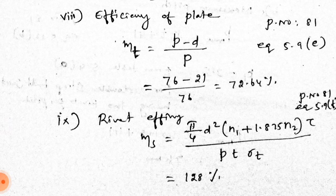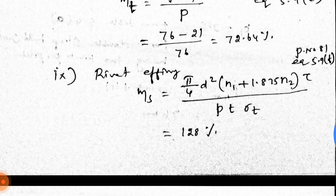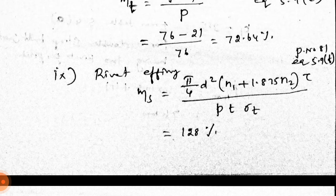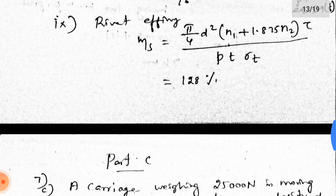The rivet efficiency formula is: (5/4) × D² × (n1 + 1.875 × n2) × tau / (b × t × sigma_t). Substituting values gives 128%. This corresponds to page 81, equation 5.9f.